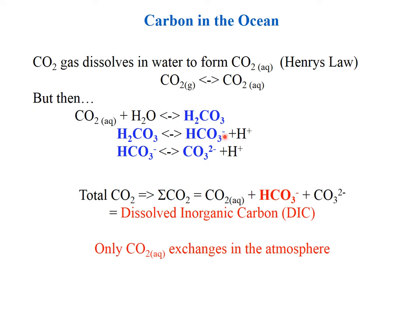Carbonic acid rapidly breaks apart to form bicarbonate and a hydrogen ion. And that bicarbonate is also a little bit unstable — it breaks apart to form carbonate ion and another hydrogen ion. These are equilibrium reactions, not like photosynthesis; they go backwards and forwards. So at equilibrium we'll have dissolved CO2 (aqueous), a very small amount of carbonic acid, and some bicarbonate and some carbonate all existing in equilibrium with each other.